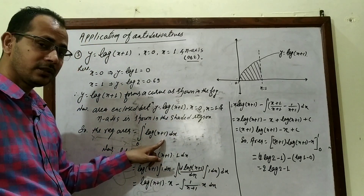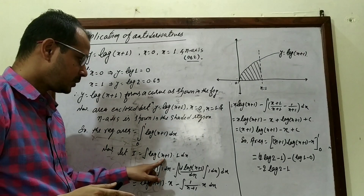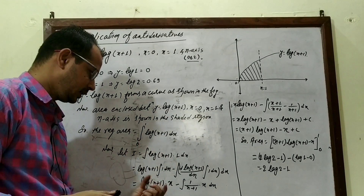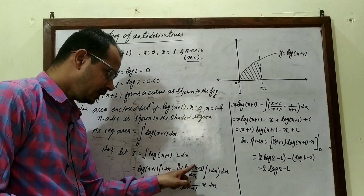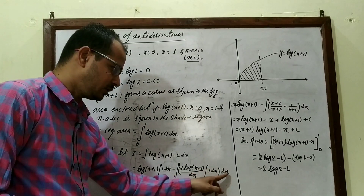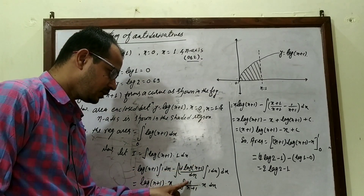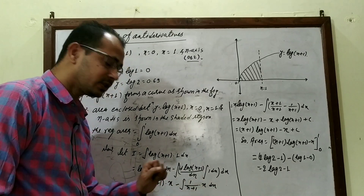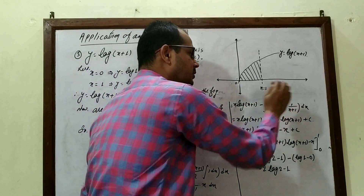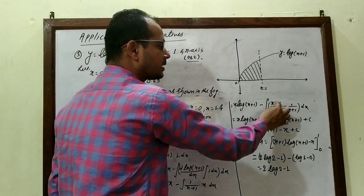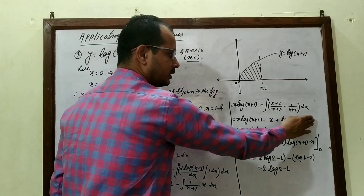Applying integration by parts: u · ∫v dx − ∫(derivative of u · ∫v dx) dx. So: log(x+1) · x − ∫[1/(x+1) · x] dx. Simplifying x/(x+1) as (x+1−1)/(x+1) = 1 − 1/(x+1). Integrating: x − log(x+1), with the minus signs giving a plus. So the integral of log(x+1) = x·log(x+1) − x + log(x+1) + C.